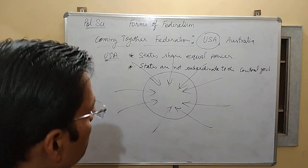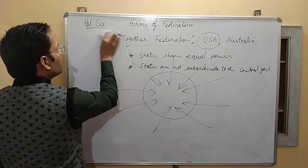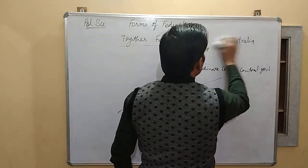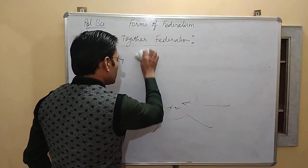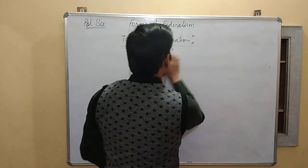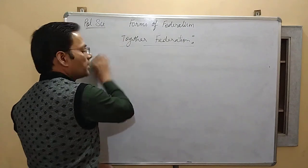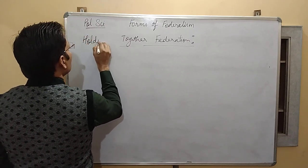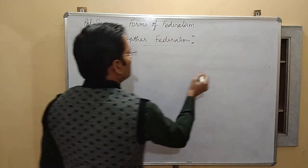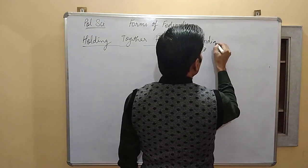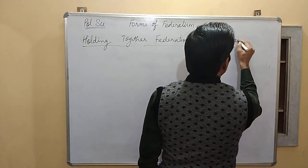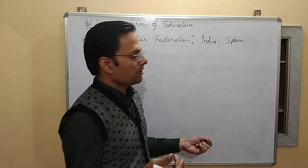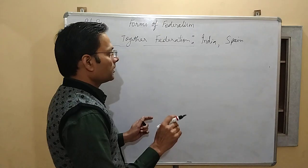The next type is holding together federation. Examples of holding together federation include India and Spain. In India, which is easy for us to understand, when India got independence it had 11 British provinces and more than 500 princely states, with great variety and large area to be accommodated.